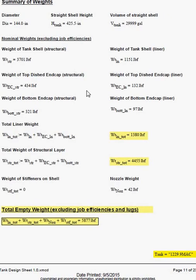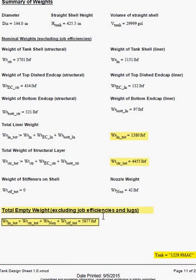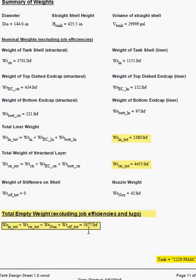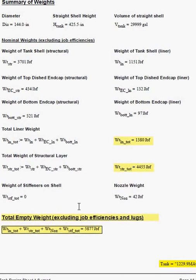On page 11, there's a summary of weights that are computed. And so the total empty weight in this case, with excluding job efficiencies and lugs, is 5877 for this example.